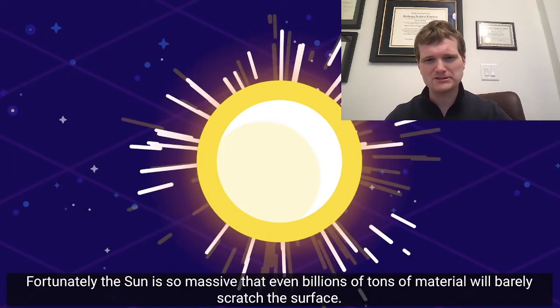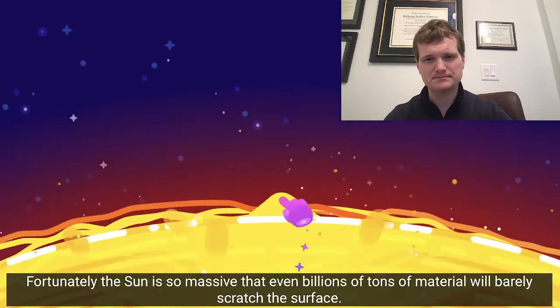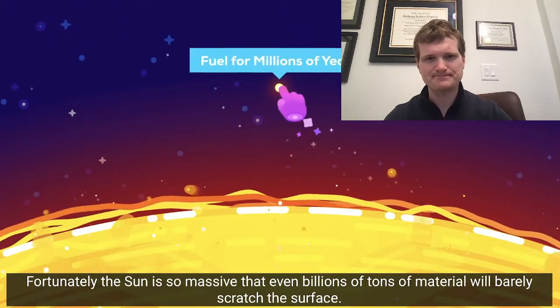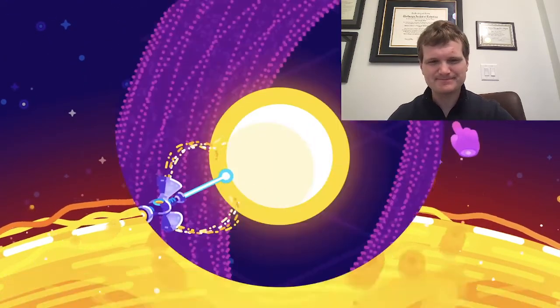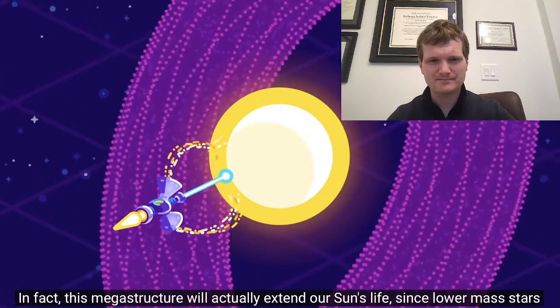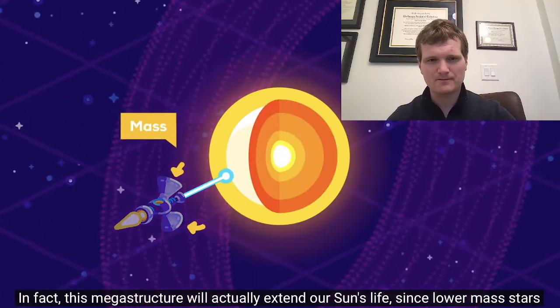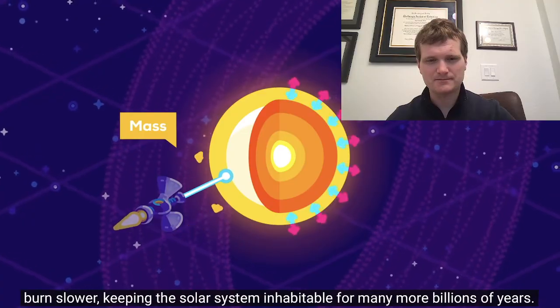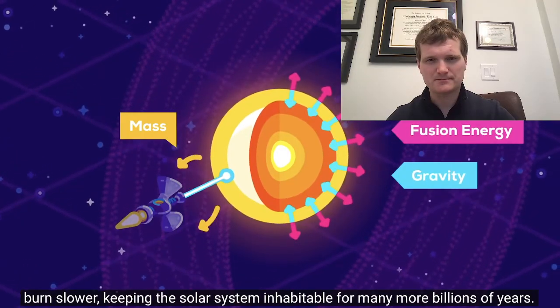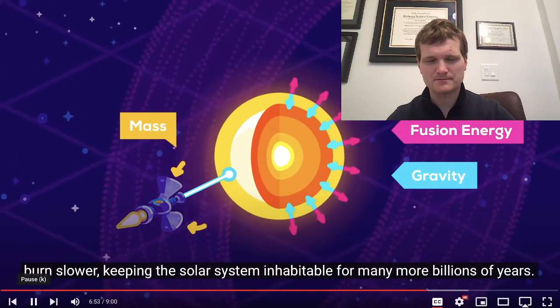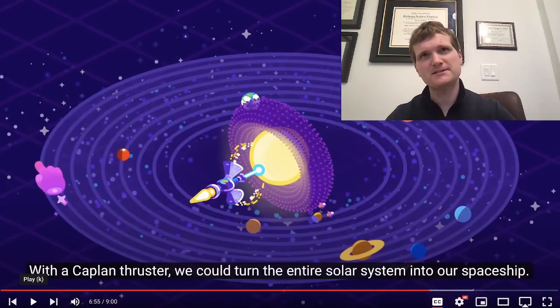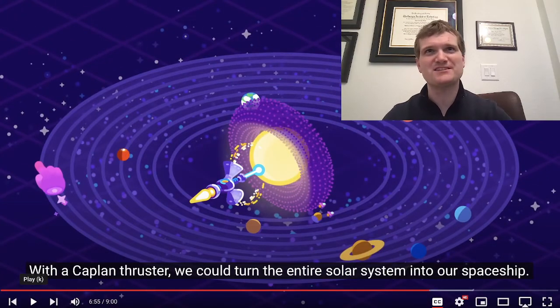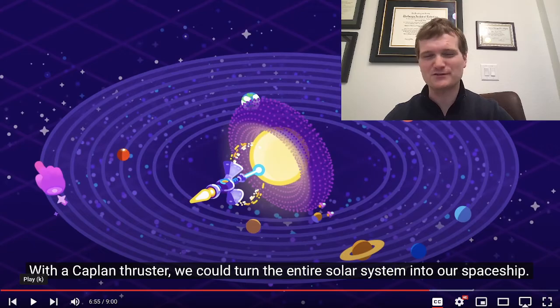Won't we use up the sun this way? Fortunately, the sun is so massive that even billions of tons of material will barely scratch the surface. In fact, this megastructure will actually extend our sun's life, since lower-mass stars burn slower, keeping the solar system inhabitable for many more billions of years. That's a good point. Just forget moving it, just use it as a life extender for a star.